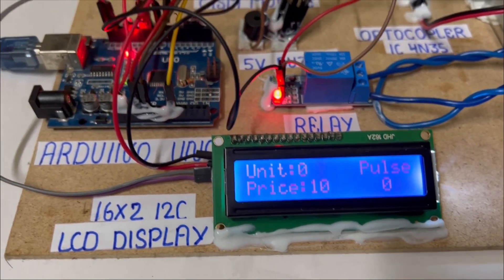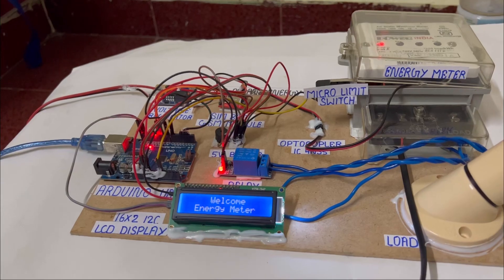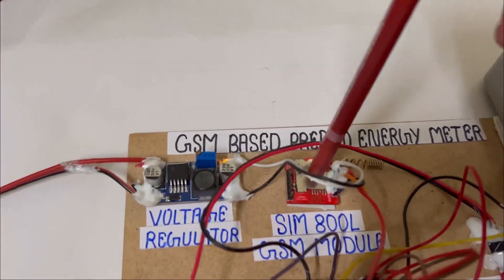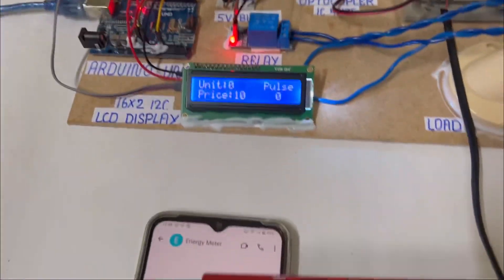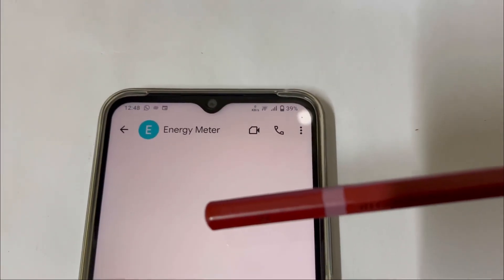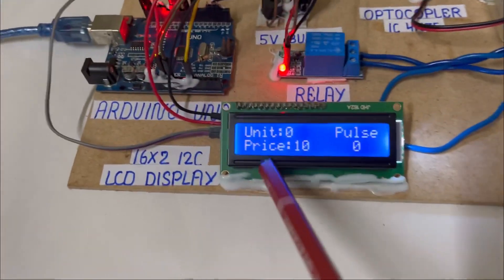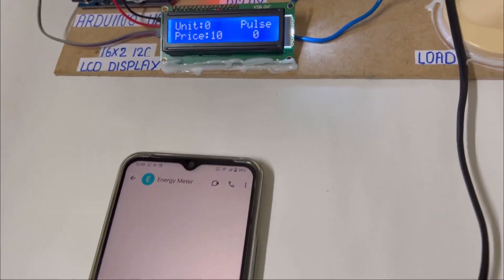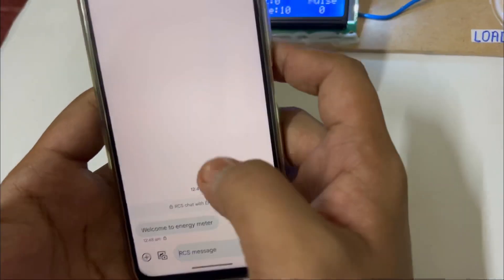Here you can see that we have connected the SIM card and we have saved the number in the name of Energy Meter. You can see the energy unit is zero, price is 10, and pulse is zero. Now the message will appear.